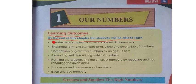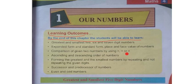The learning outcomes include: greatest and smallest 5, 6, and 7 digit numbers; expanded form and standard form; place and face values of numbers; comparison of two numbers using greater than, less than, or equal symbols; ascending and descending order; forming greatest and smallest numbers by repeating and not repeating given digits; successor and predecessor of numbers; and even and odd numbers.